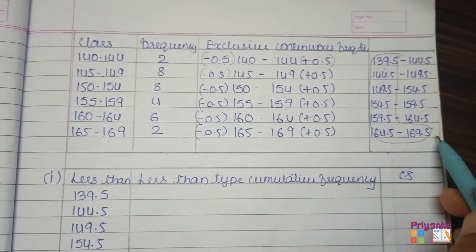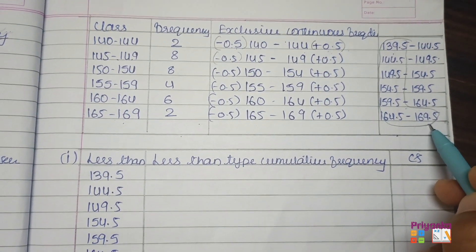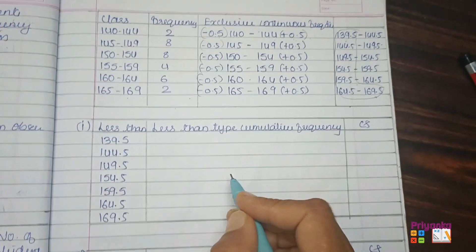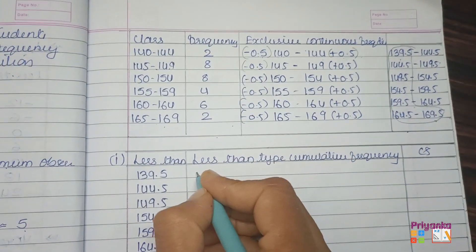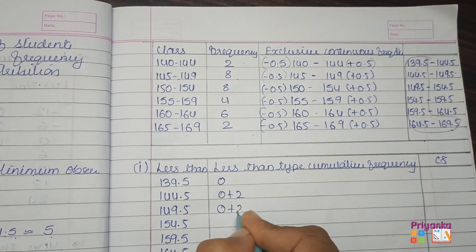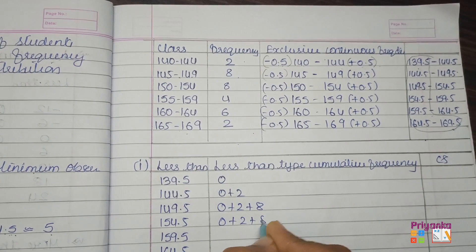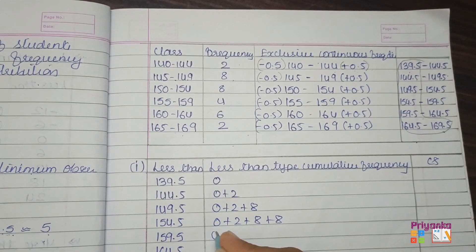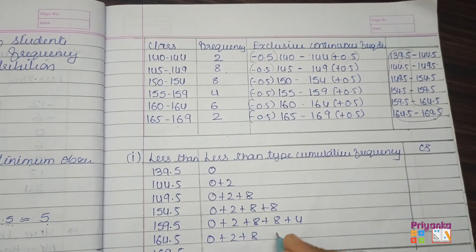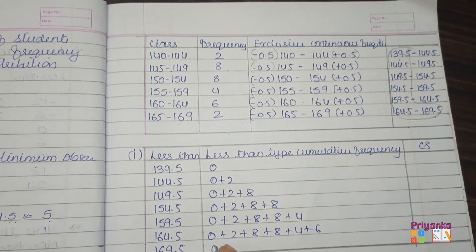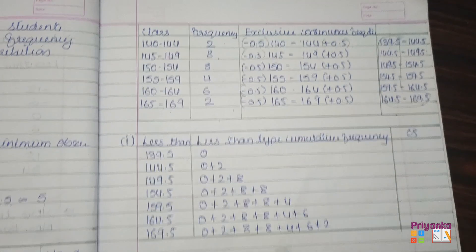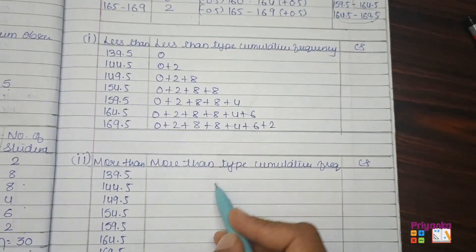From the exclusive class, we take the lower boundary points plus one extra row from the last line and write them down for less-than and more-than columns. For less-than cumulative frequency, we start by adding 0, then 0 plus 2, then 0 plus 2 plus 8, then 0 plus 2 plus 8 plus 8, and so on — keep adding the next frequency. At the end don't forget to write the total.